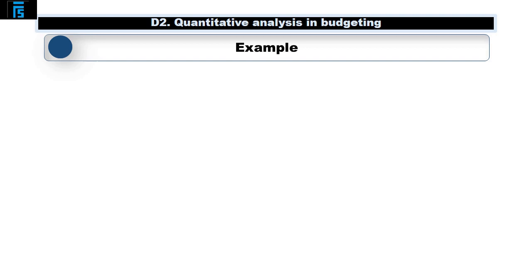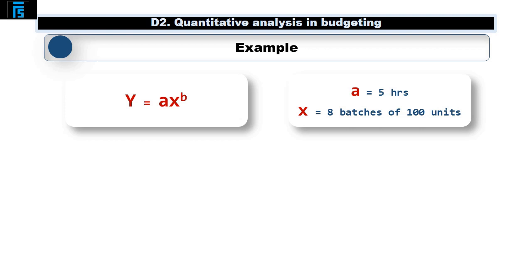Let's use this formula to demonstrate how we can use the same data from the previous example, and arrive at the same answer of 2048 hours for 800 units, based on initial make time of 5 hours per unit, and a learning rate of 0.8, or 80%. So, in our example, a is 5 hours, and x is 8 batches of 100 units. b needs to be calculated using the formula of log(LR) / log(2). Notice that we are not stating x as 800 units, but as the number of 100 unit batches that are being made. This distinction is extremely important if you are to arrive at the correct answer.